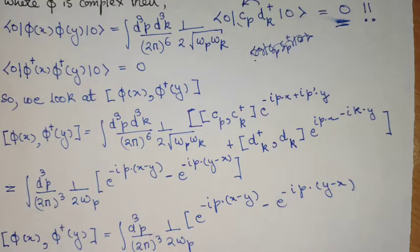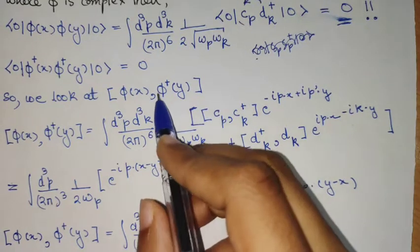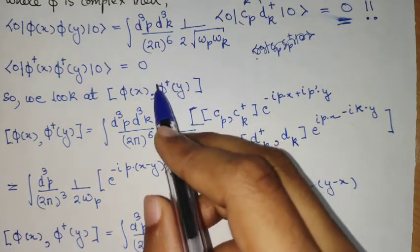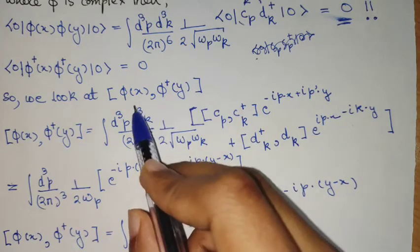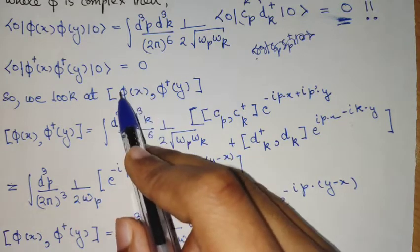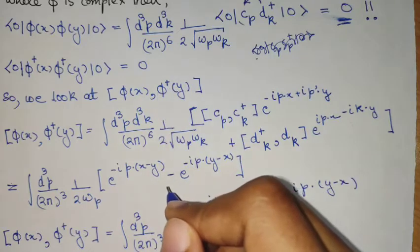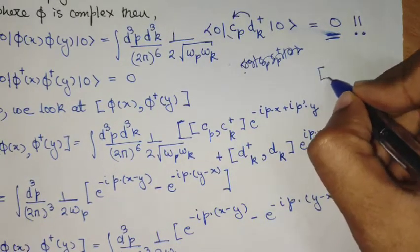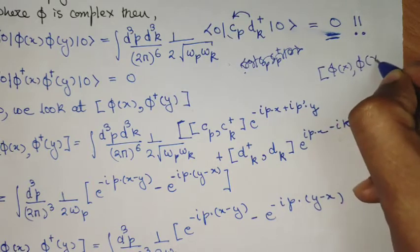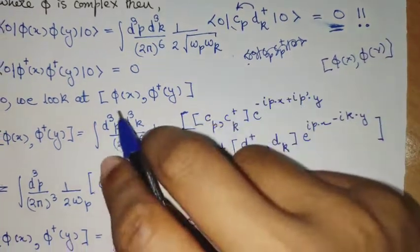So what we need to do is we need to define a propagator that uses this second degree of freedom, which is this phi dagger field. So for this, let's try to compute the commutator of this phi x and phi dagger y. So in the scalar field, we computed the commutator of phi x and phi y.